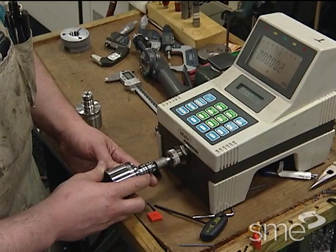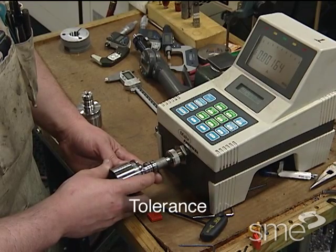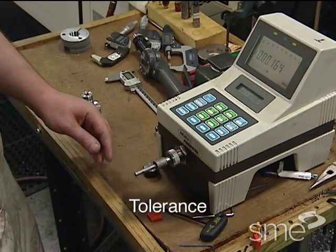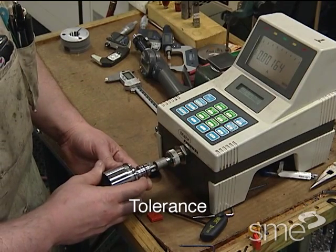Because of the limits of manufacturing, all part dimensions are made within a specified working tolerance, which is the total permissible amount by which a dimension may vary from a specified size.